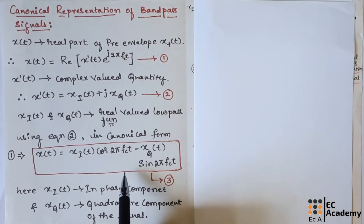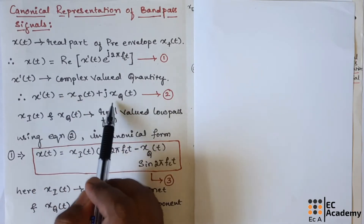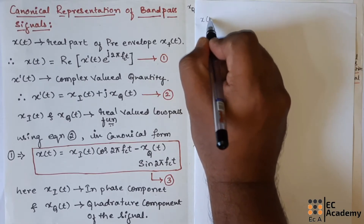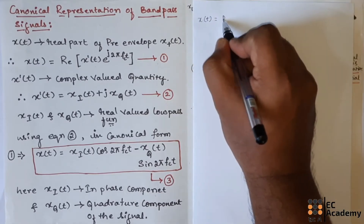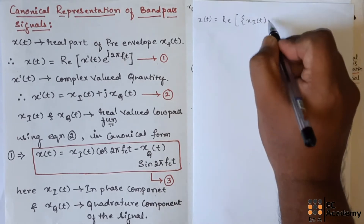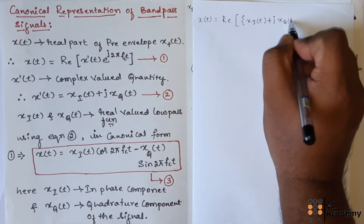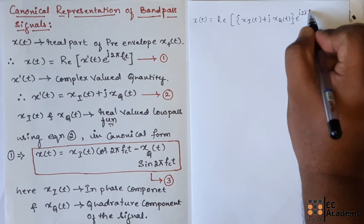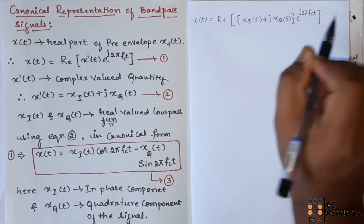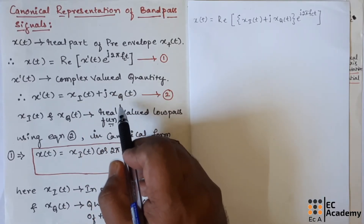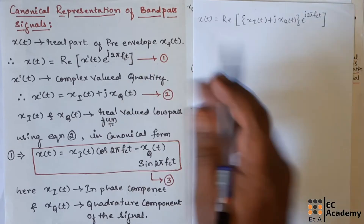Now let us see how we can obtain equation 3 using equations 1 and 2. In equation 1, let us substitute this expression. We can write x(t) is equal to real part of [xI(t) plus j·xQ(t)] into exponential to the power of j 2πfct. In place of x̃(t), we have substituted this term, which is nothing but substituting equation 2 in equation 1.